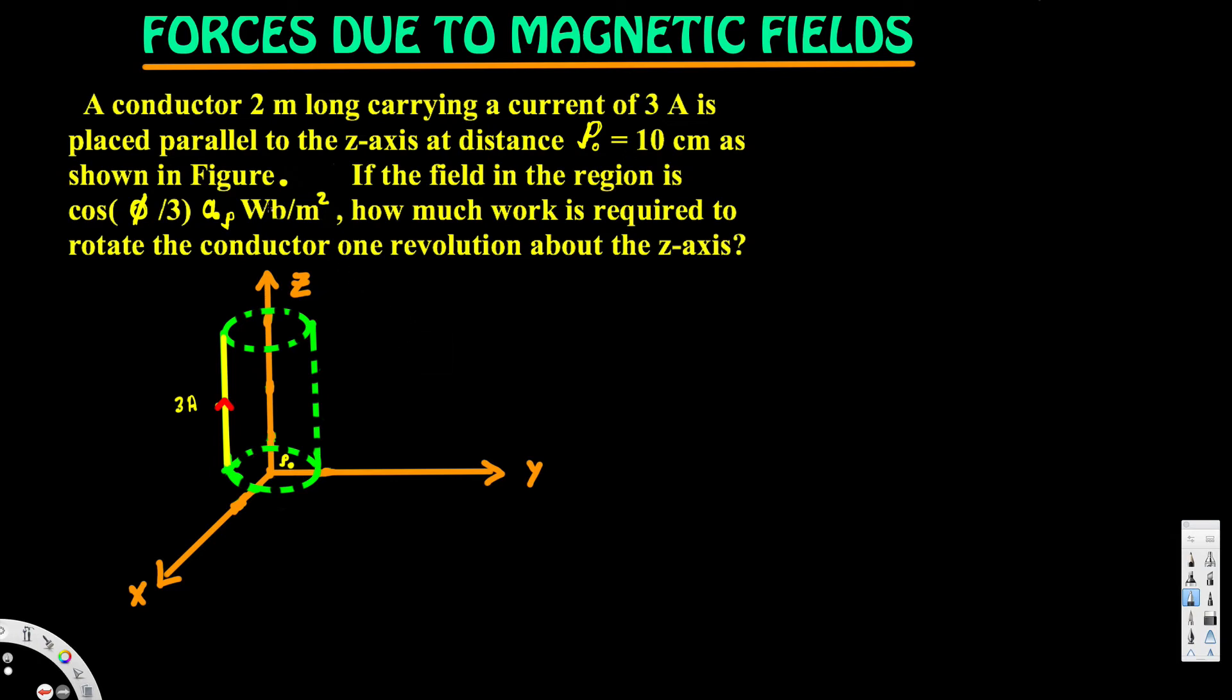Hey, what's going on guys? Let's look at this problem right here. This question is asking: a conductor 2 meters long carrying a current of 3 amperes is placed parallel to the z-axis at a distance ρ₀ equals 10 centimeters as shown in the figure. If the field in the region is cos(5φ/3)aρ Weber per meter squared...